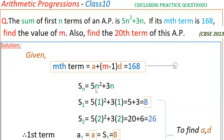We know that Sn is equal to 5n squared plus 3n. So S1, the sum of the first term, is 5 into 1 squared plus 3 into 1, that is 5 plus 3, equal to 8. This is the first term. S2 is the sum of first two terms, equal to 5 into 2 squared plus 3 into 2, that is 20 plus 6, which is 26. So S2 is 26.